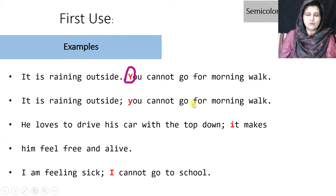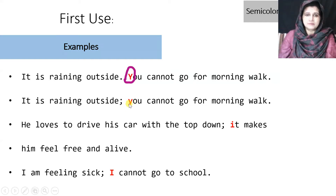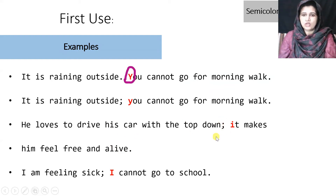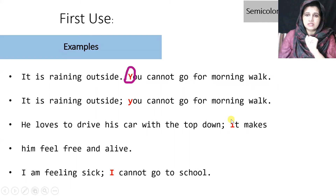After a semicolon, we do not capitalize the first letter — unless it is a proper noun. You can see that 'y' is small in 'you cannot go for morning walk.' Another example: 'He loves to drive his car with the top down; it makes him feel free and alive.' Again, two independent clauses joined through a semicolon, and 'i' of 'it' is small. People often mistakenly capitalize this letter the way they do after a period, which is wrong.